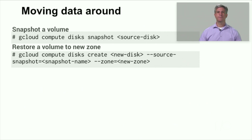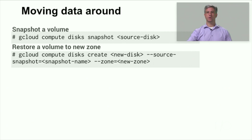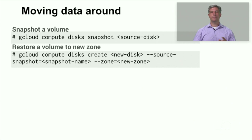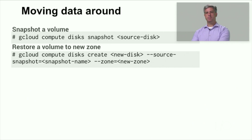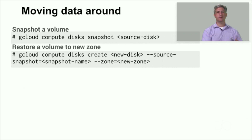The last tip is about moving data. If you want to move persistent disk volumes from one zone to another zone, the easiest thing to do is to snapshot the PD volume into Google Cloud Storage and then restore it to the other zone. If you need to move individual pieces of data from a non-PD source into a VM into the PD volume, you can use the gcloud push command. To do the reverse and move data from a PD volume in a VM to a non-PD destination, you can use the gcloud pull command.